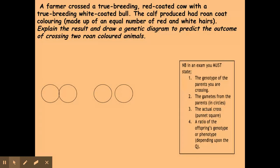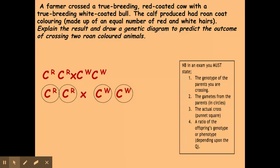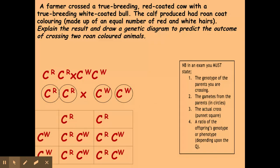First I'll show the cross between a true breeding red and a true breeding white. I show the genotypes of the parents, then express the gametes — it's important to put these in circles so you're showing the examiner you know what you're talking about. I then put them into a Punnett square, complete the cross, and get 100% roan cattle in my ratio.